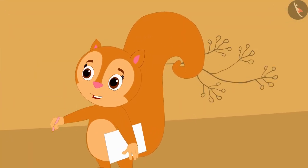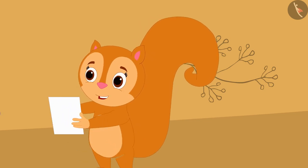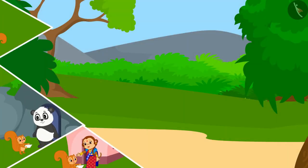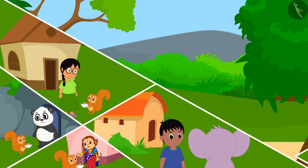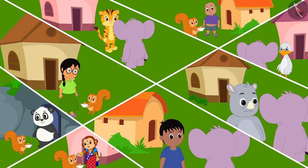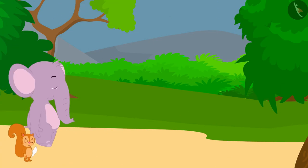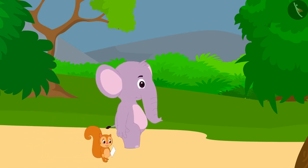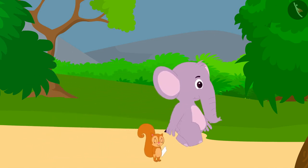They plan to ask the villagers by writing down the names of some pickles on a paper, then recording the number of people who like each pickle in a table. Chanda and Appu go to people's homes to find out which pickle they like. By the end of the day they completed their table by asking a hundred people.